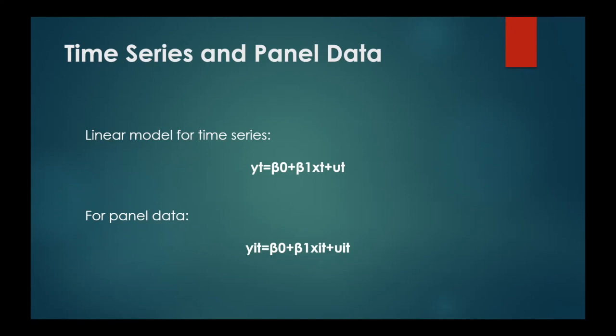Generally, before applying regression or predicting the models, we first check whether the time series of the variables is stationary or not. For that, a unit root test is to be applied for checking the stationarity of the time series, in terms of defining whether it is stationary or non-stationary data.